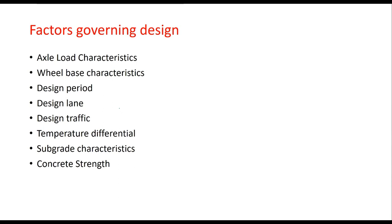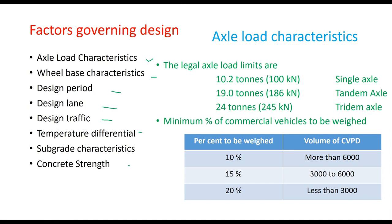Several factors govern the design of a concrete pavement: axle load characteristics, wheel load, wheelbase characteristics, design period, design lane, design traffic, temperature differential, subgrade characteristics, and concrete strength. The legal axle load limits in India are 10.2 tons for single axle, 19 tons for tandem axle, and 24 tons for tridem axle. It is important to carry out an axle load survey to get the overloading spectrum. The concept of VDF is not applied here. Sample size for axle load survey: for more than 6,000 CVs per day, at least 10%; for 3,000 to 6,000, at least 15%; and for less than 3,000 CVs per day, at least 20%.